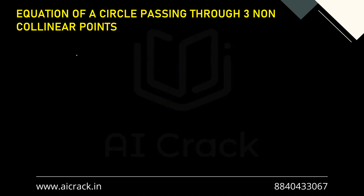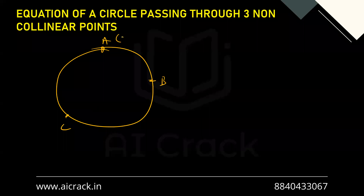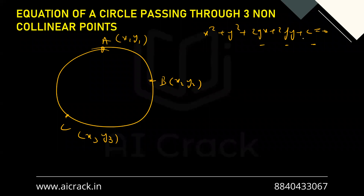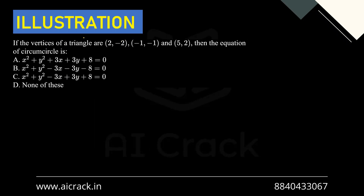Now let's talk about the equation of a circle passing through three non-collinear points A(x₁,y₁), B(x₂,y₂), C(x₃,y₃). We write the general equation x² + y² + 2gx + 2fy + c = 0 and substitute each of the three points. This gives three equations in g, f, and c, which we solve to find the unknowns and hence the equation of the circle.